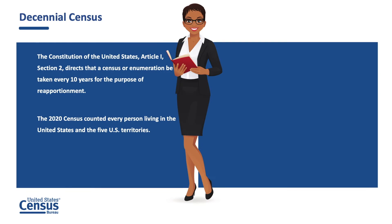The decennial census and redistricting go hand in hand. Article 1, Section 2 of the Constitution directs that the census or enumeration be taken. So every 10 years, starting with the first census in 1790, the U.S. Census Bureau conducts a census once, only once, and in the right place to determine the number of people living in the United States for the purpose of reapportionment.